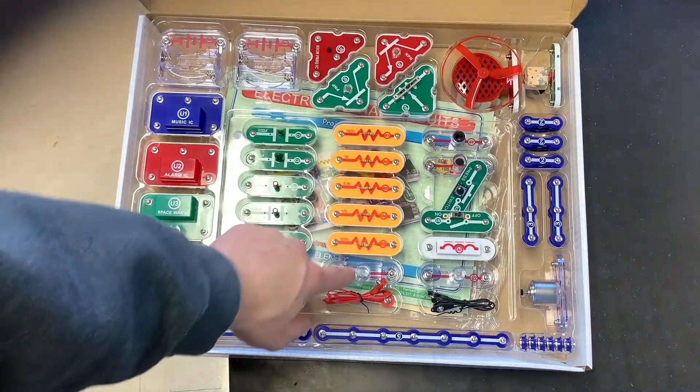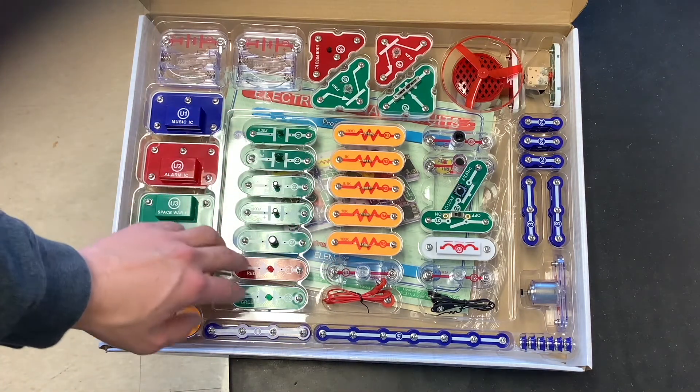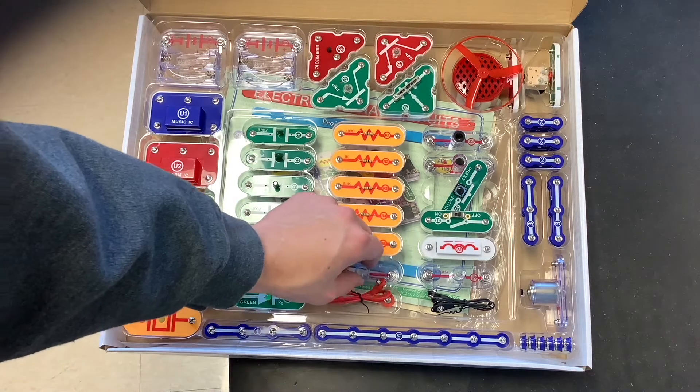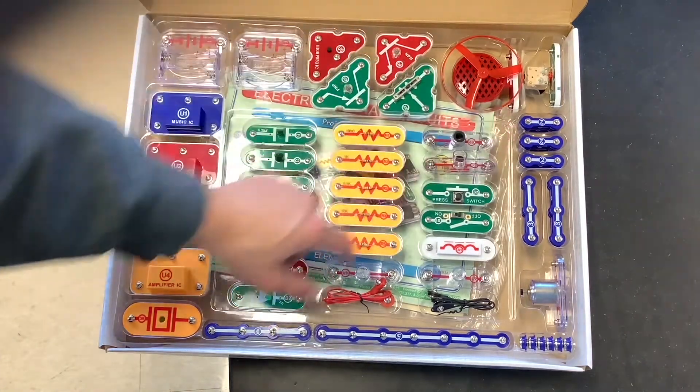Right here in the middle, these are all resistors. Then you have some capacitors over here. You have some LEDs down here. This and this are both lamps. And over here, you have some switches.